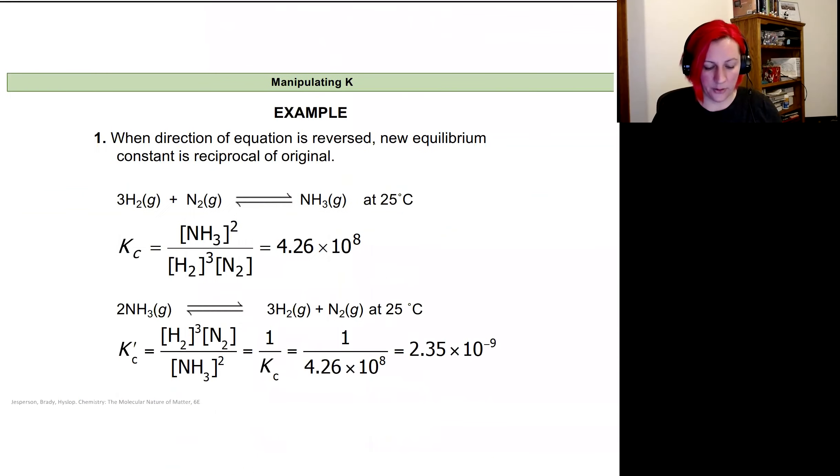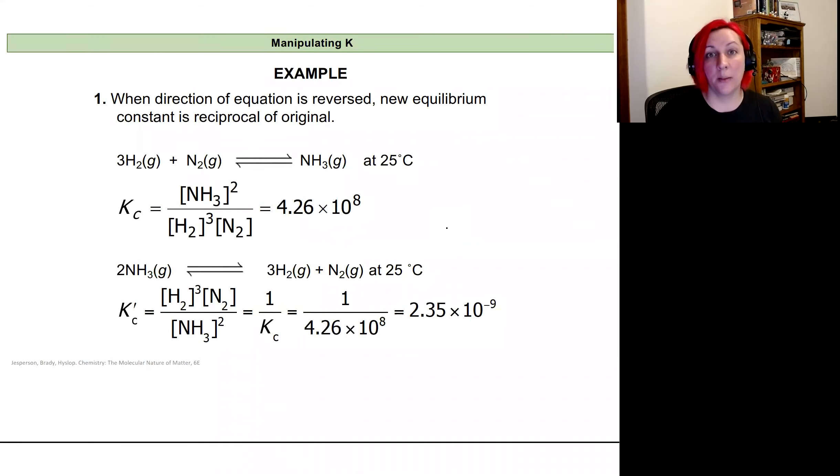Here's an example. If I'm looking at hydrogen and nitrogen combining to form ammonium, then I would have an equilibrium constant that would have my product over my reactants. And it'll produce a value that is pretty big: 4.26 times 10 to the eighth.